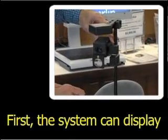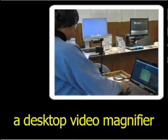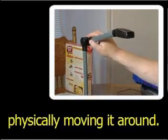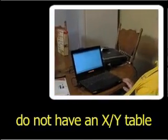First, the system can display an image in the same way as a desktop video magnifier by placing the material to be viewed directly under the camera and physically moving it around. These systems generally do not have an XY table.